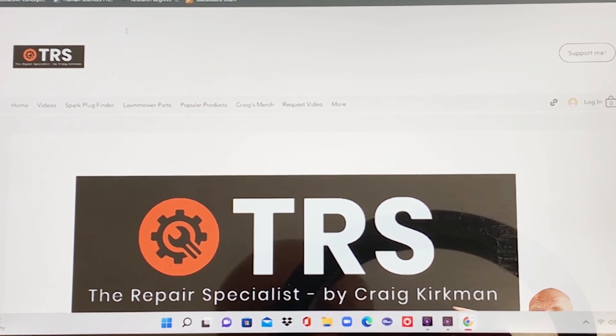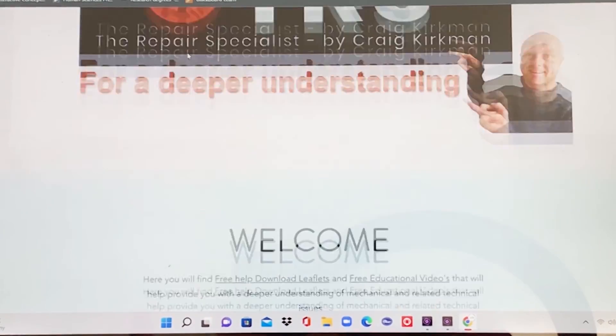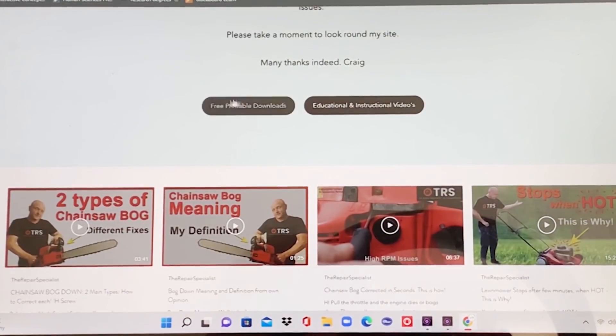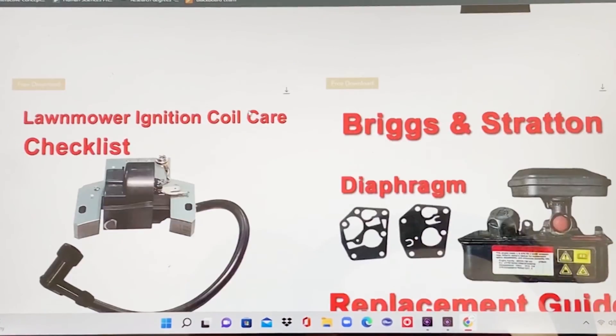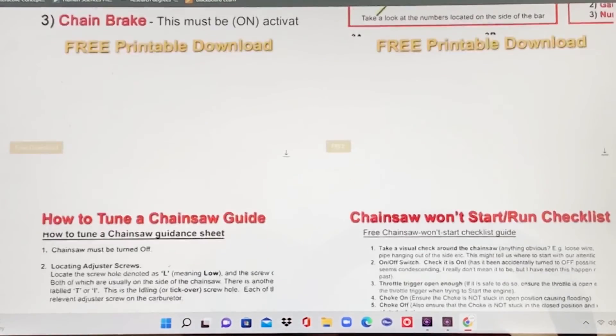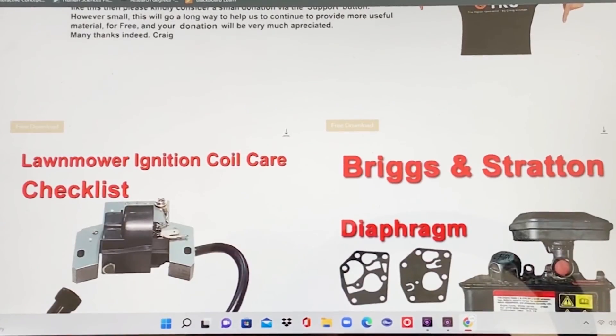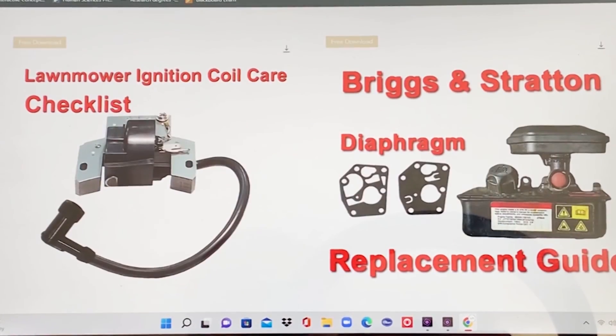I've just covered a few of the basic causes. I haven't covered all causes, but what I've mentioned are some of what I've experienced. Don't forget to take advantage of the Repair Specialist Online website where from the landing page you can click the free printable downloads button. I've got six free downloads here on several different topics including lawnmower ignition coil care checklist, Briggs and Stratton diaphragm replacement guide, how to tune a chainsaw guide, and a chainsaw won't run guide.